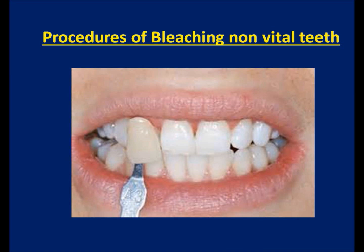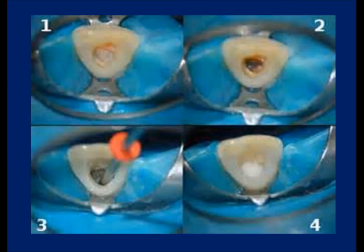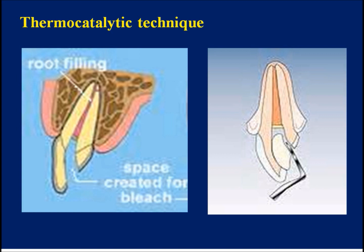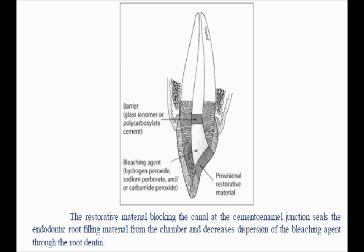Bleaching techniques for endodontically treated teeth. Thermocatalytic technique: first, isolate the tooth with rubber dam. Then place the bleaching agent — hydrogen peroxide, sodium peroxide, or both — in the pulp chamber. Heat the agent with a heat source, either hot instruments or a light source. Repeat until bleaching gives satisfactory results. Wash the pulp chamber with water and seal the tooth with a cotton pellet and temporary material. After 2–3 weeks, recall the patient to evaluate bleaching results, then place a suitable filling material to seal the tooth permanently.